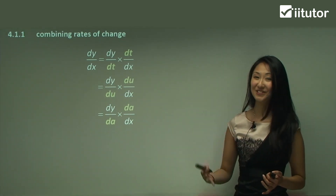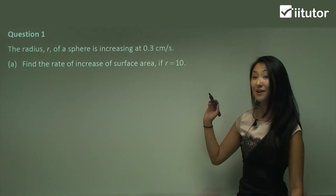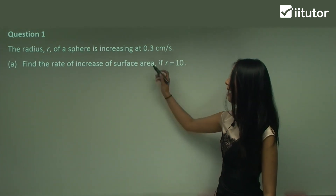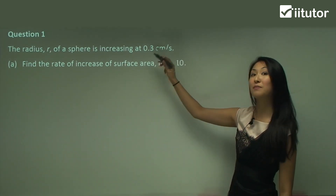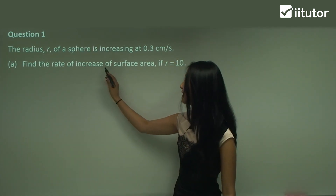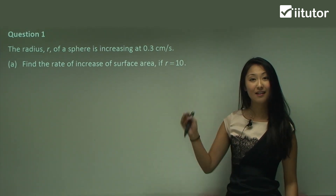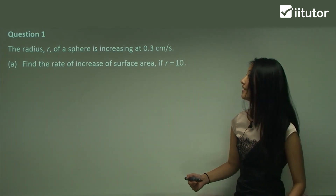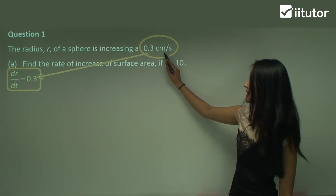The best way to learn rates of change is to do questions, so that's exactly what we're going to do. In question one, we have the radius r of a sphere increasing at 0.3 centimetres per second. Note, we've already been given information here. We want to find the rate of increase of the surface area when the radius equals 10. Firstly, just write out the information you have: the rate of change for the radius is 0.3 centimetres per second.